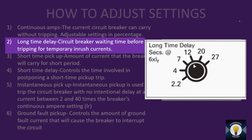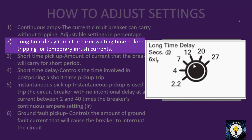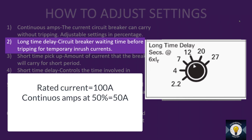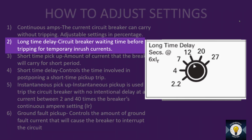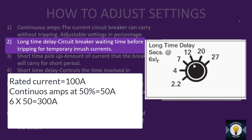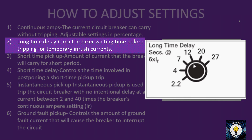Long time delay is the circuit breaker's waiting time before tripping for temporary inrush current. It is expressed in seconds at six times the continuous amps. For example, if the breaker is rated 100 A and the continuous amp switch is at 50%, continuous amps = 50 A. Six times 50 A is 300 A. Up to 300 A, you can adjust the tripping delay from 2.2 to 27 seconds using this switch.